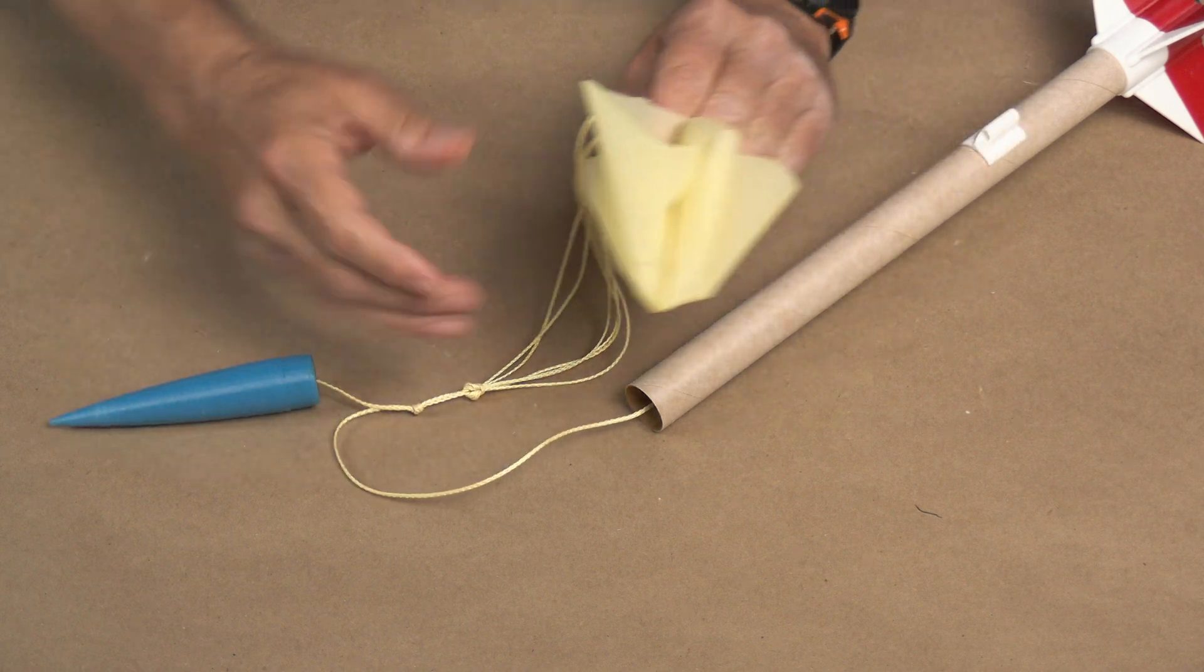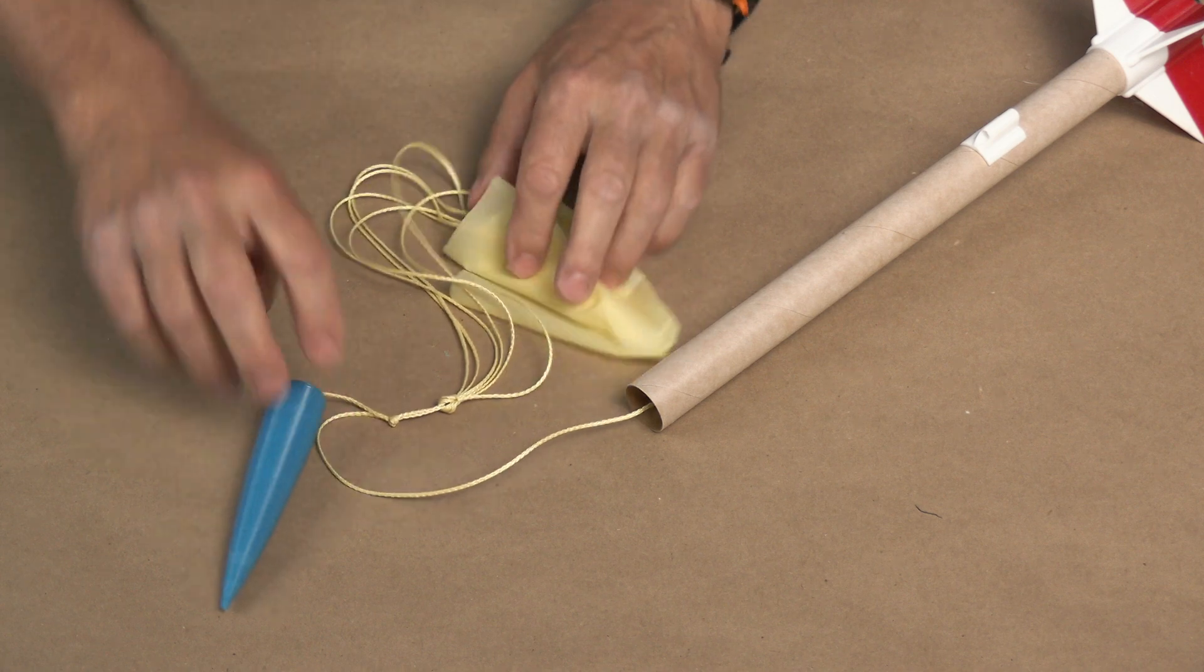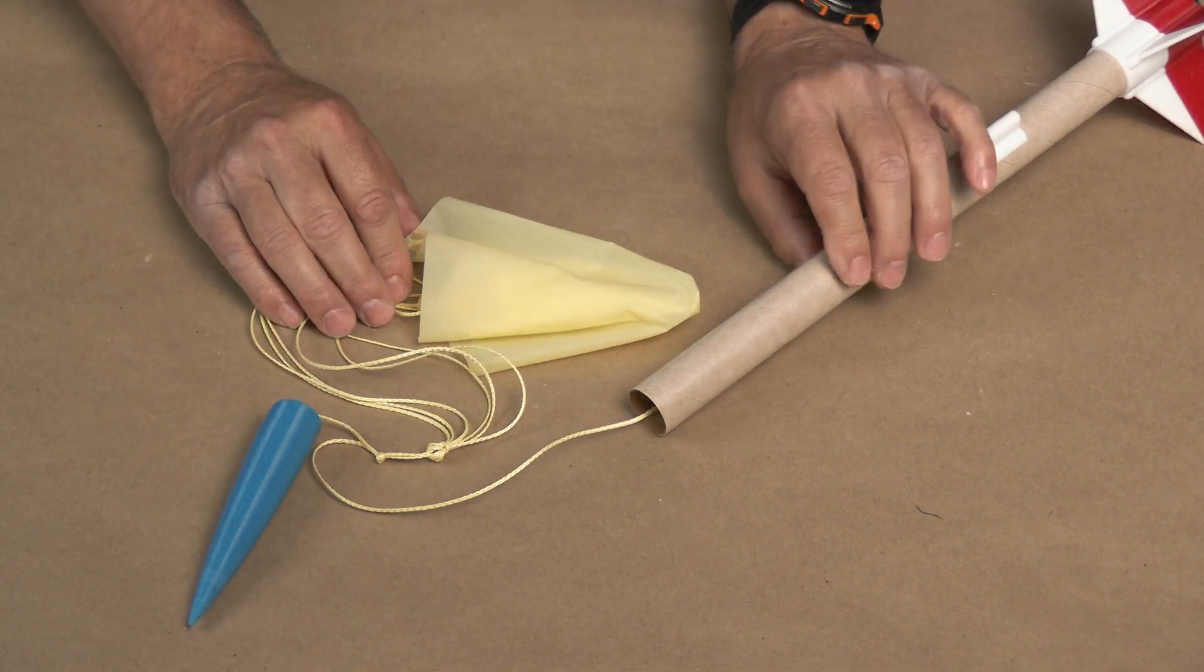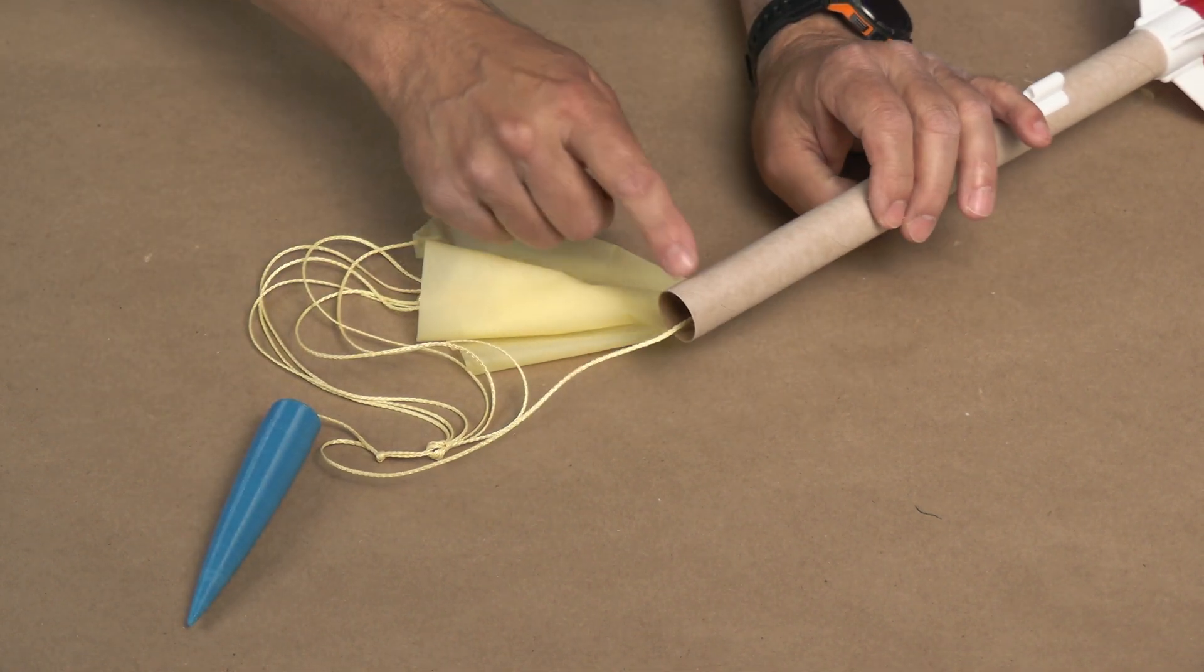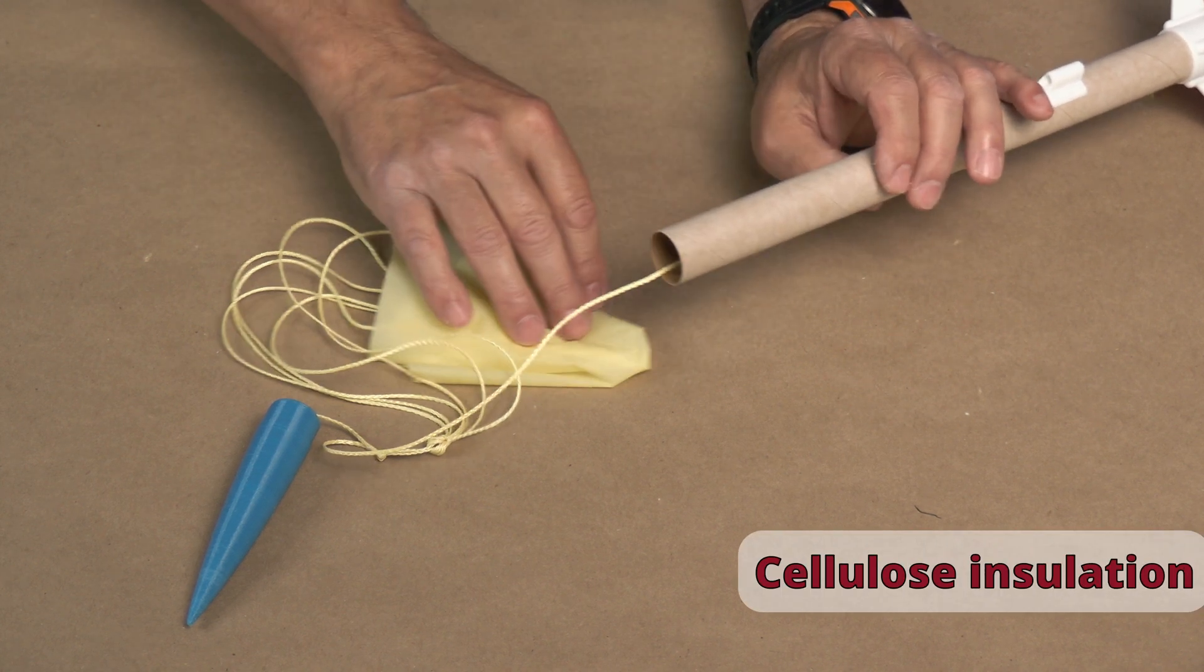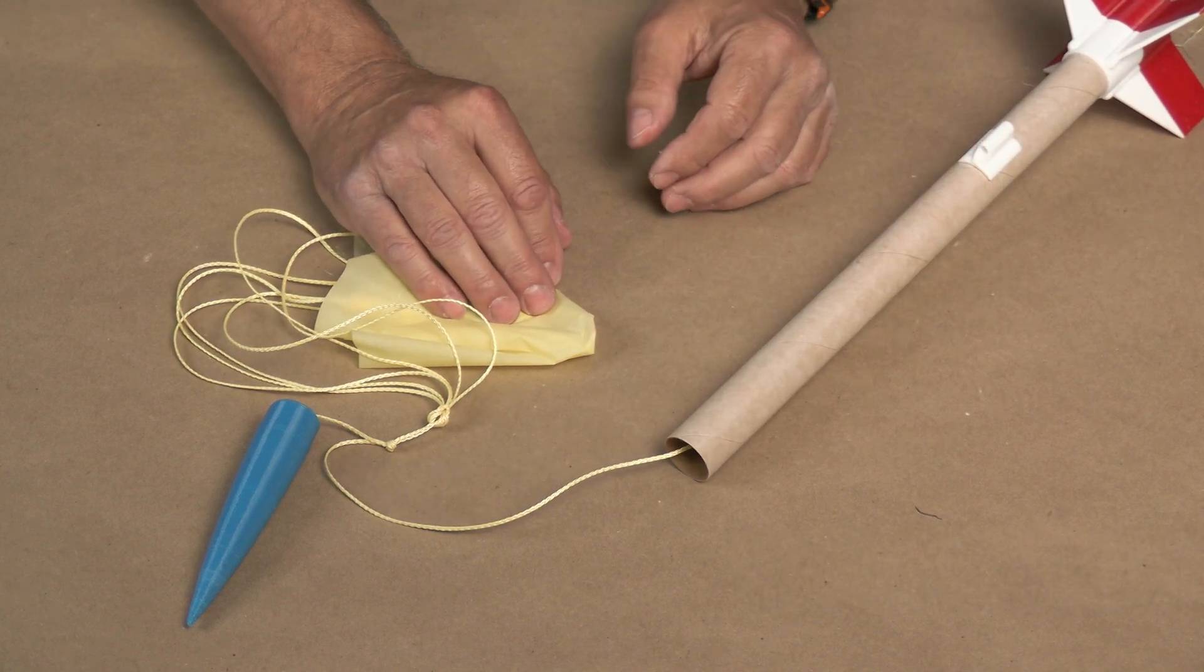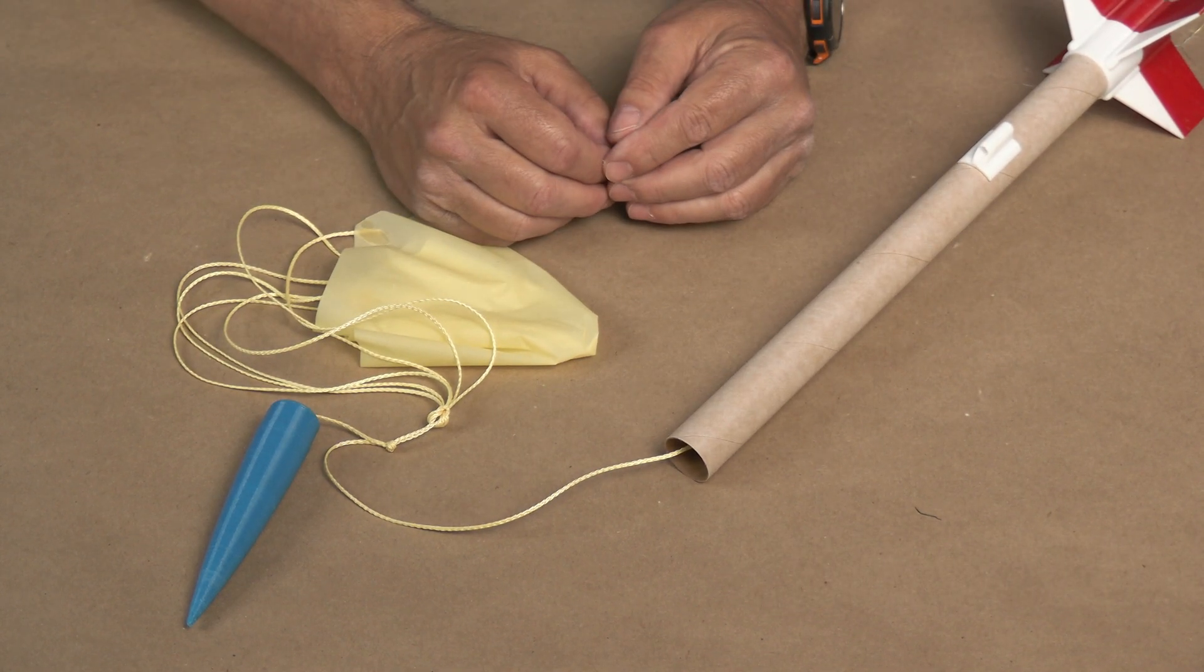Simple to do, easy to reproduce, and that's it for our building process. Then, of course, you'll need to use some parachute wadding. Use a generous amount in the tube. Pack it all in the tube. And I've flown it on a B6-4 and a C6-5. It probably will fly on an A8-3 just as well.